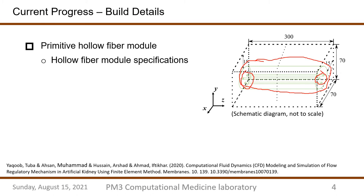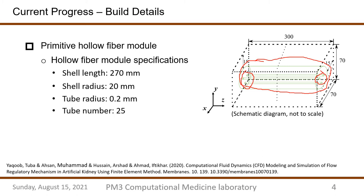With the data referred from the thesis at the bottom of this slide, we constructed a 3D array whose specifications are shown here. For shell length, it is 270 millimeters. For shell radius, it is 20 millimeters. For tube radius, it is 0.2 millimeters. For tube numbers, there are 25. That is to make things easier to analyze, and we will add to the actual circumstance in later research. The actual size of the array matches with the hollow fiber module, and we reserved 30 millimeters as a so-called buffer size for future modifications.